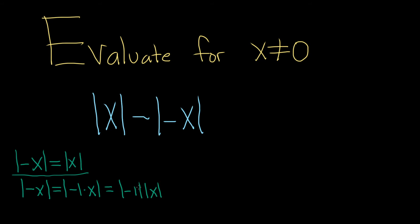And then the absolute value of negative 1, well that's the distance between negative 1 and 0. So that's just 1. So you get 1 times the absolute value of x, so it's just the absolute value of x.